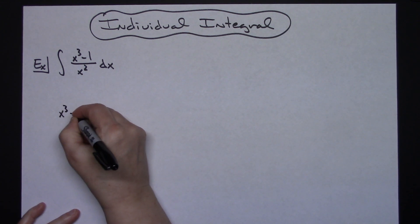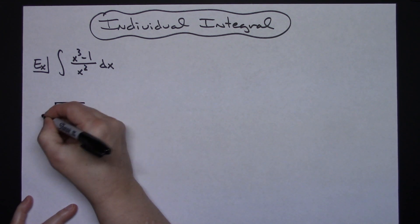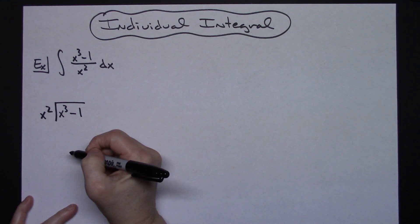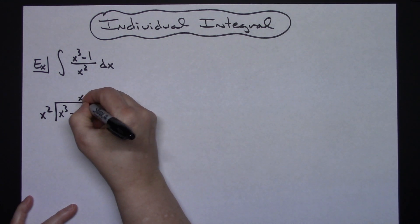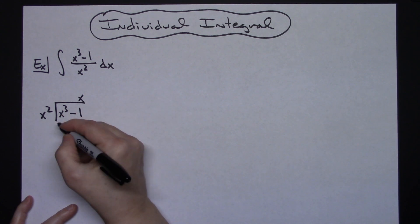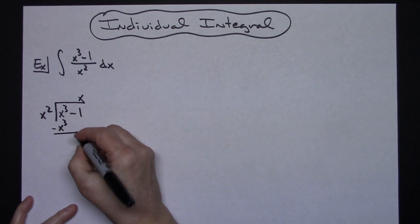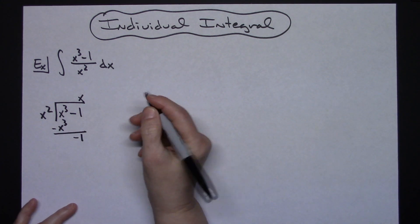Put that x to the third minus 1 on the inside and divide by x squared. x squared goes into the x to the third x times. So when I multiply x times x squared, it gives me an x to the third. Crossing that out I have a remainder of minus 1.